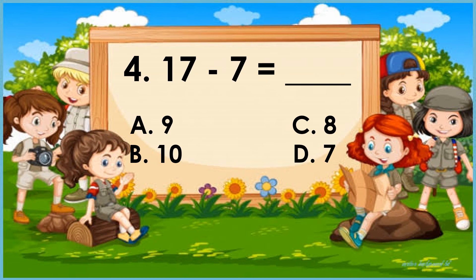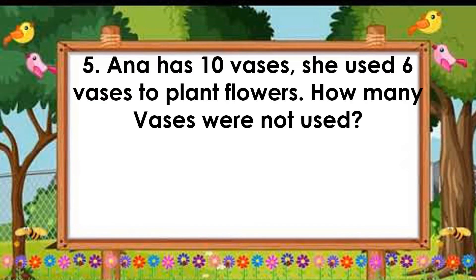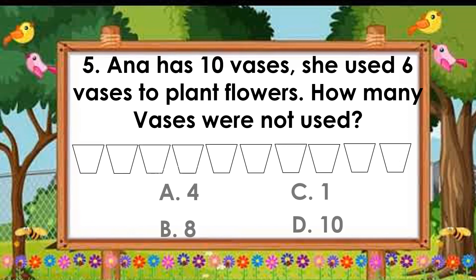What is your answer? Number five: Anna has 10 vases. She used 6 vases to plant flowers. How many vases were not used? Is it A, 4; B, 8; C, 1; or D, 10? Write the letter of the correct answer on your answer sheet.